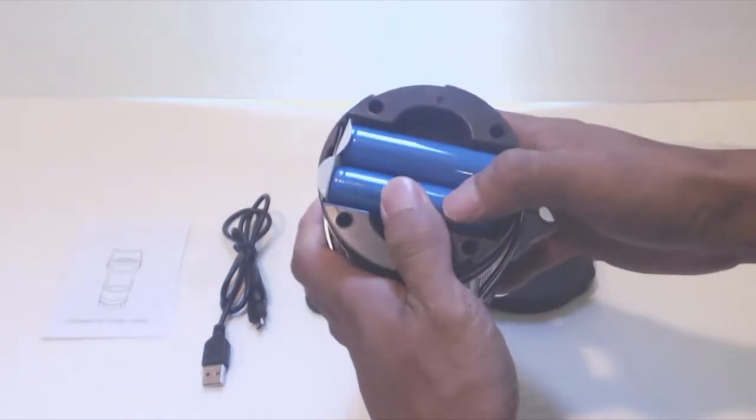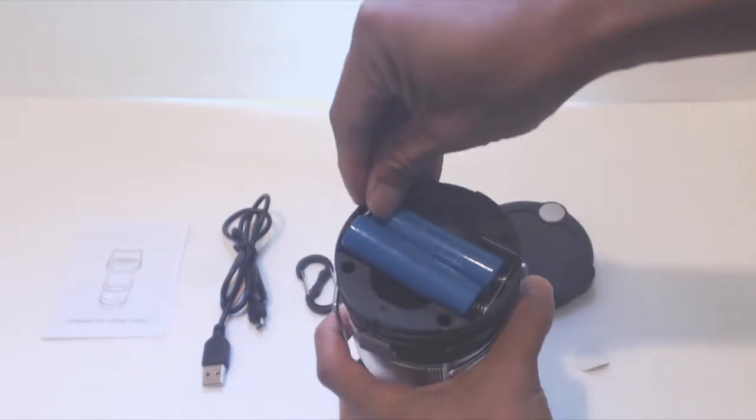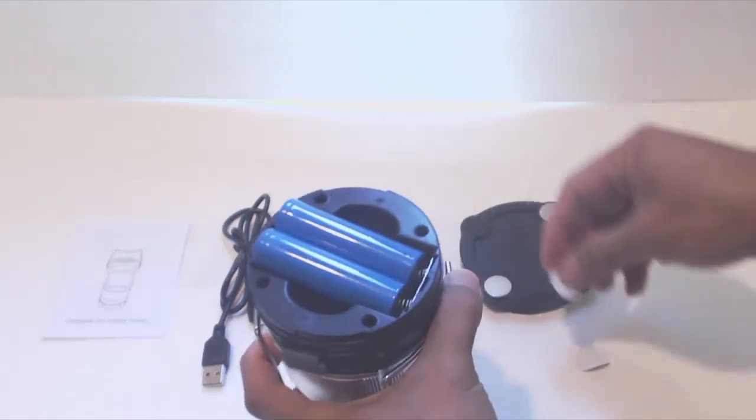The battery bay on top, between the two handles, opens by turning the cap counterclockwise. You can use three standard AA batteries here, which are not included.